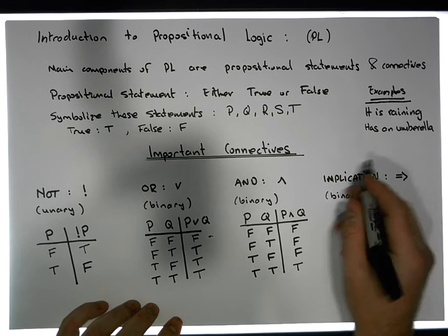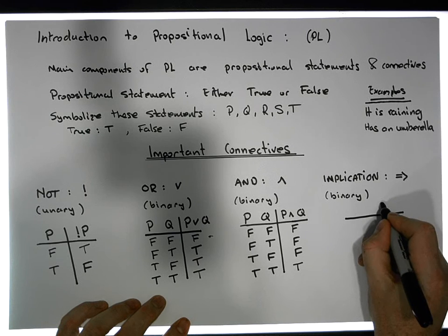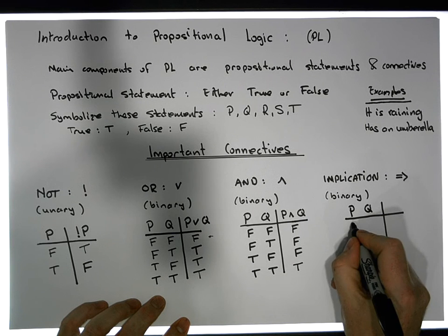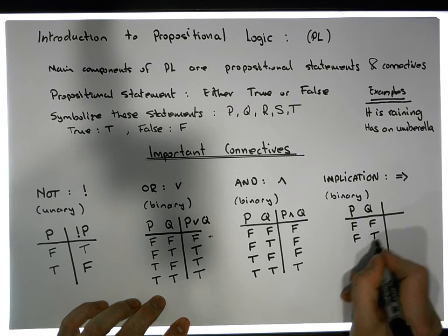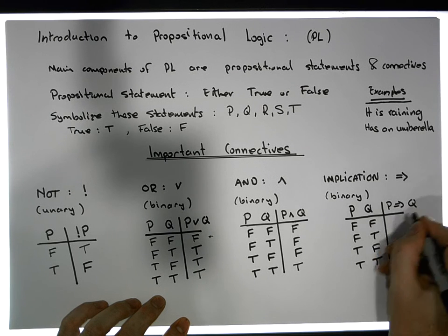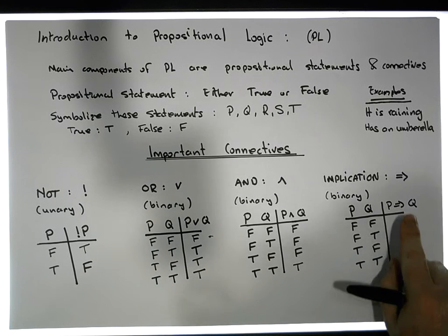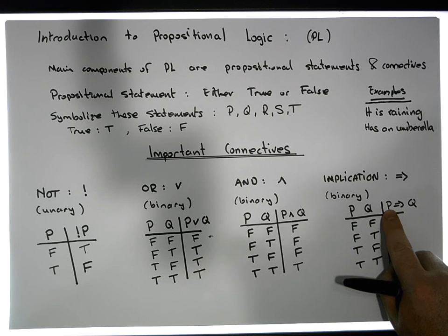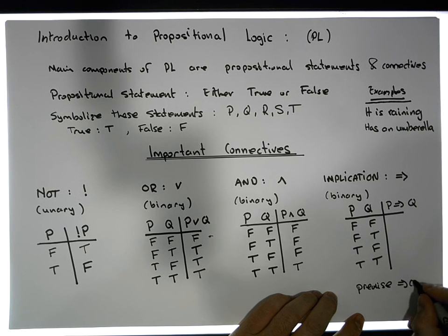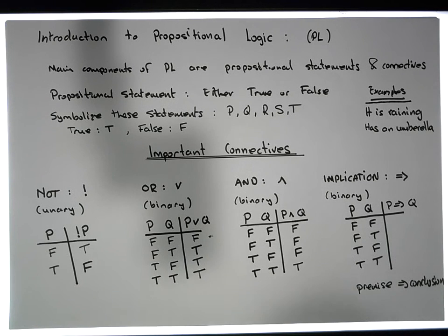The implication is a little bit more tricky to understand. It takes two propositions P and Q with states false/false, false/true, true/false, true/true. P implies Q is a proposition that has a truth value dependent on both the left and right operand. The left operand we call the premise, and the right operand we call the conclusion. An implication is only ever false when the premise is true and the conclusion is false.